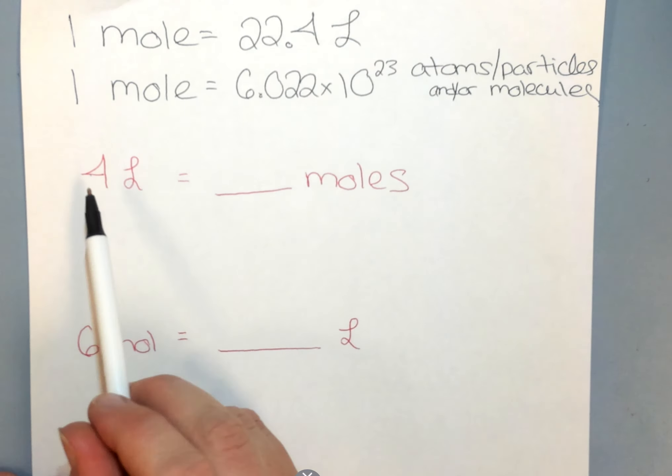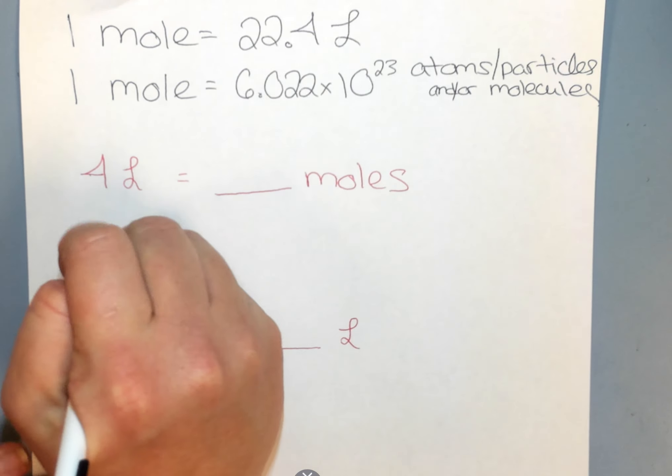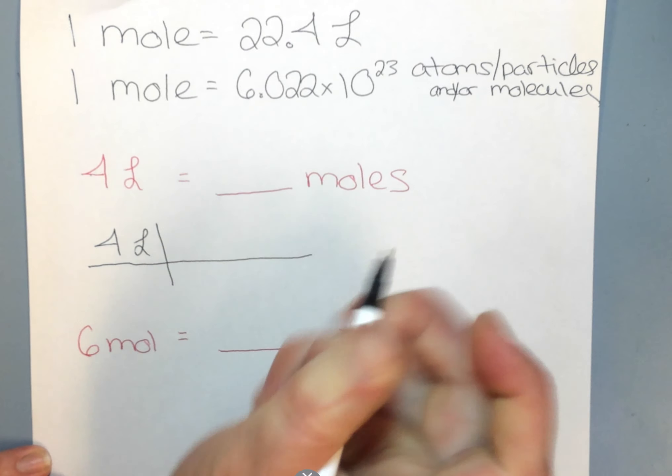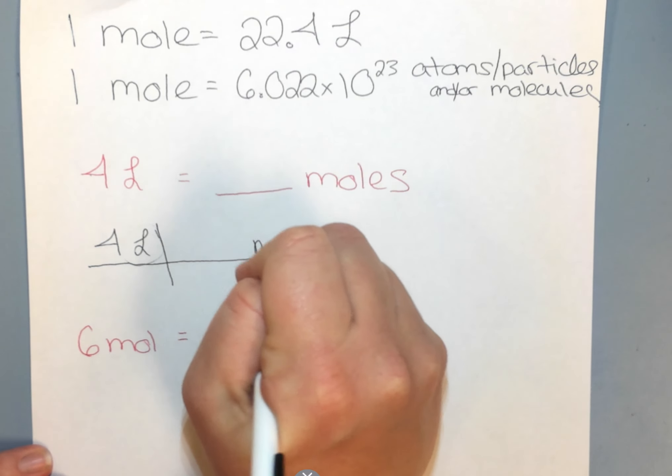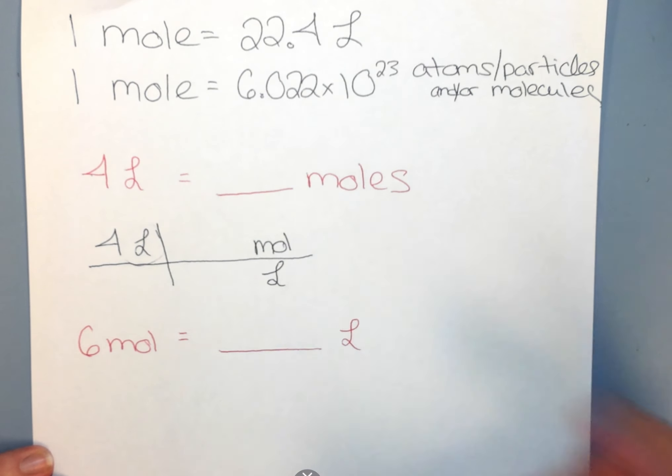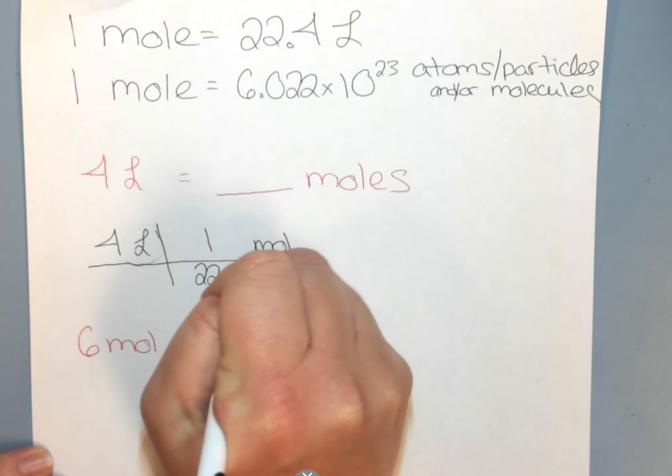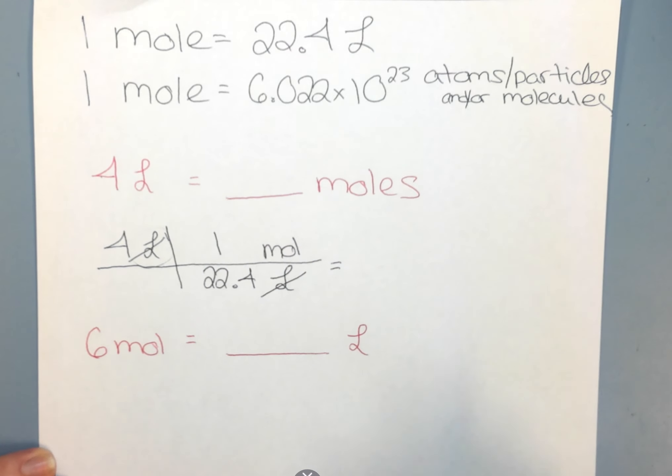This example, question 1 says: 4 liters is equal to how many moles? I'm going to set it up with my given in the numerator. And just like we did before, liters is up top, so liters comes down to the bottom. And I'm trying to get to moles. So I look at my conversion factor. 1 mole is equal to 22.4 liters. So 1 mole is 22.4 liters. Liters cancels. I'm left with my answer in moles. I just multiply, and then I divide.